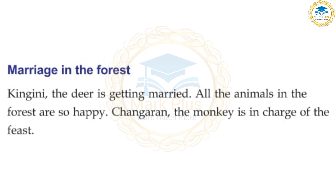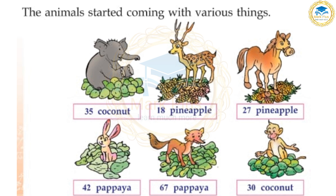Next day — Marriage in the forest. All the animals are so happy. Changaran the monkey is in charge of the feast. The animals start coming with various things: Elephant brought 35 coconuts, Deer brought 18 pineapples, Horse brought 27 pineapples, Rabbit brought 42 papayas, Fox brought 67 papayas, Monkey brought 30 coconuts.